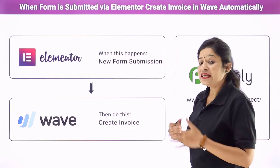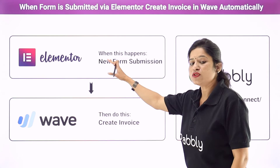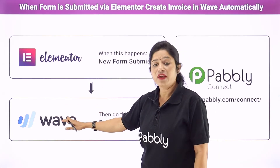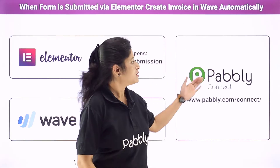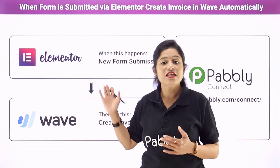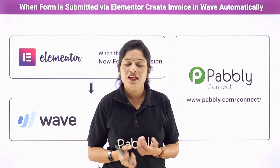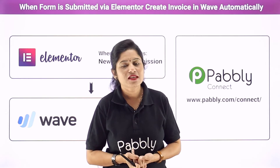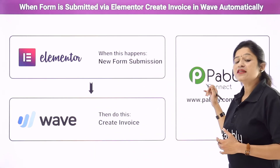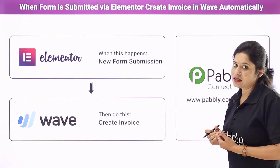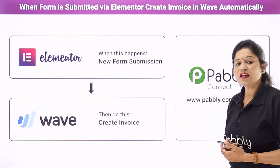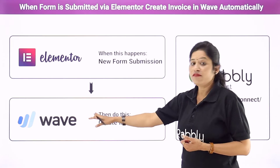In this particular automation, the idea is that whenever a new form is submitted via Elementor Forms, invoices should automatically get generated for the customer. For this, we need to create a connection between Elementor Forms and Wave. For creating that integration, we are going to use a software application named Pabbly Connect. Pabbly Connect is an automation and integration software which will help us integrate both these applications automatically. The best part is it doesn't require any coding skills or programming knowledge — even a non-technical person can use it very easily.